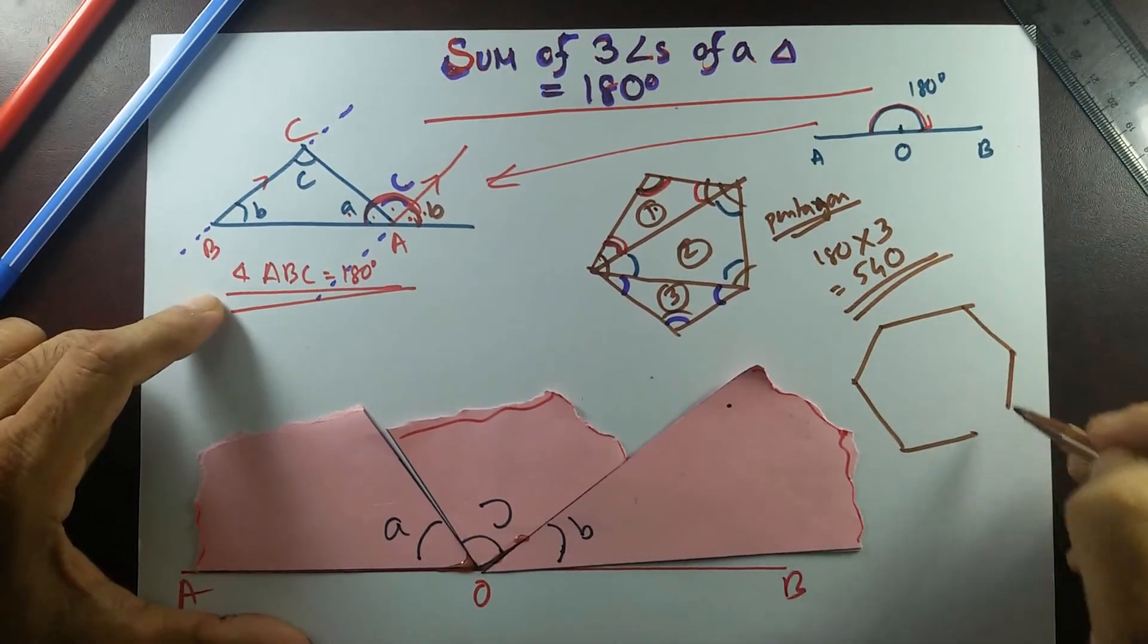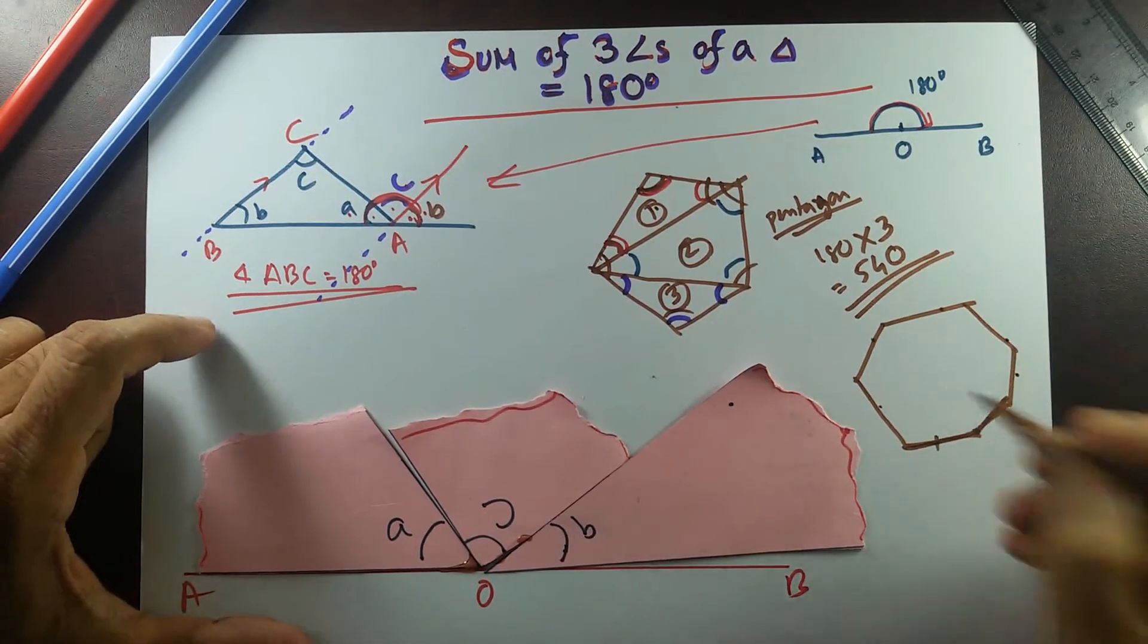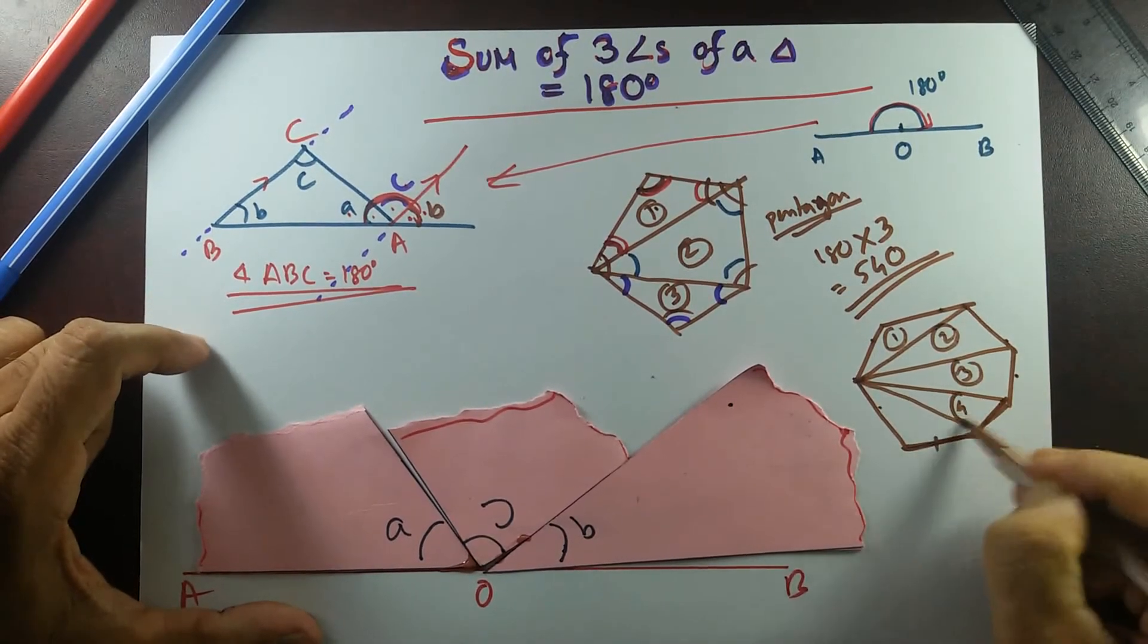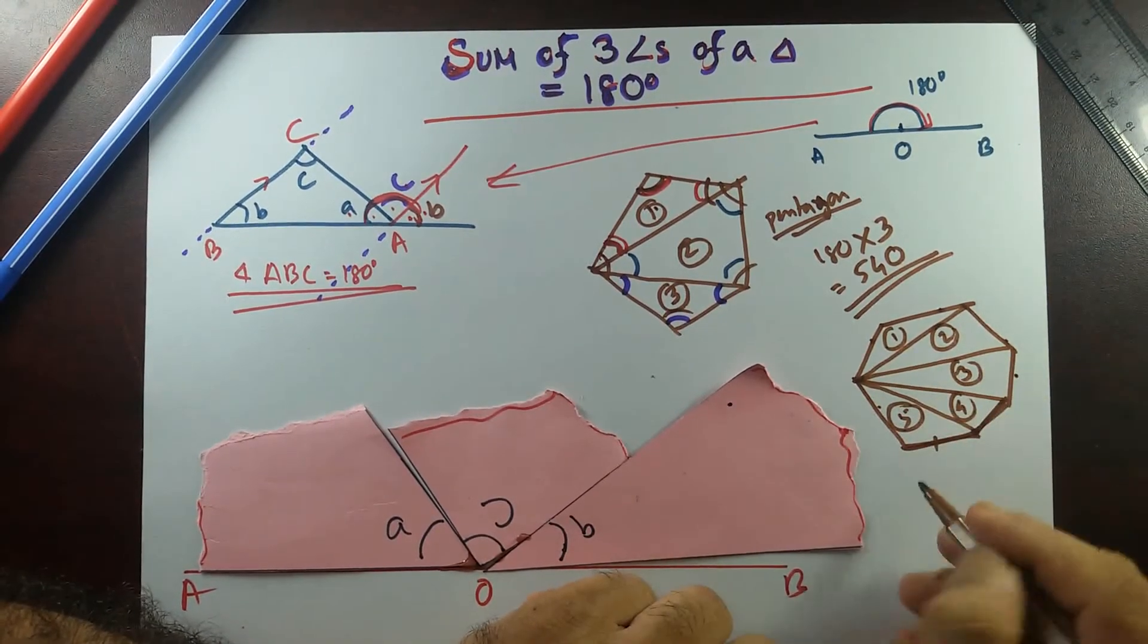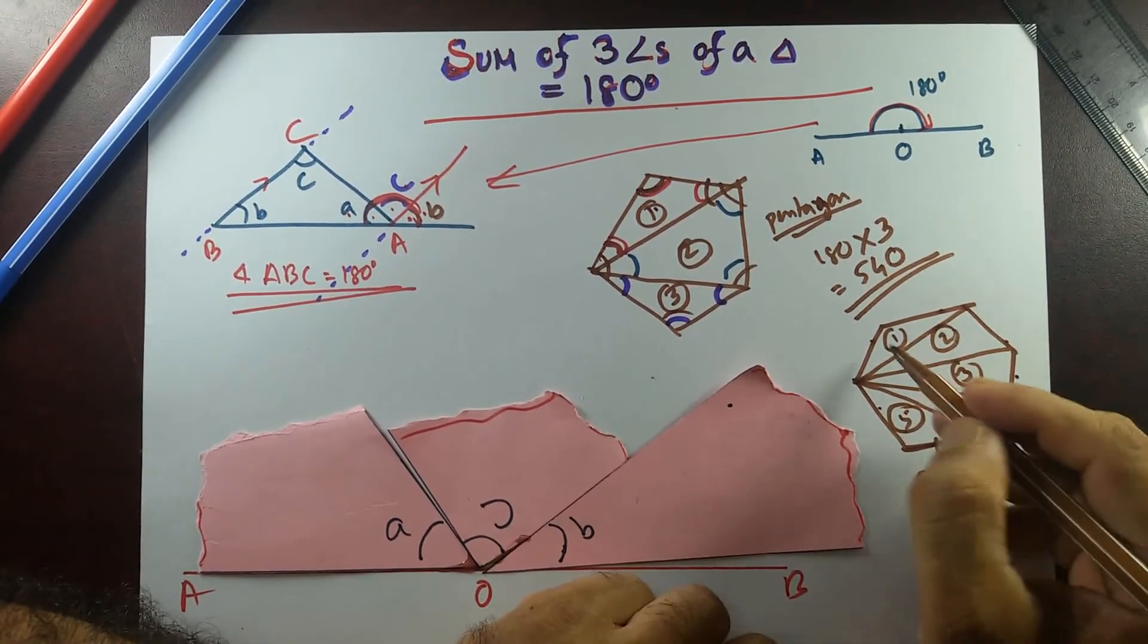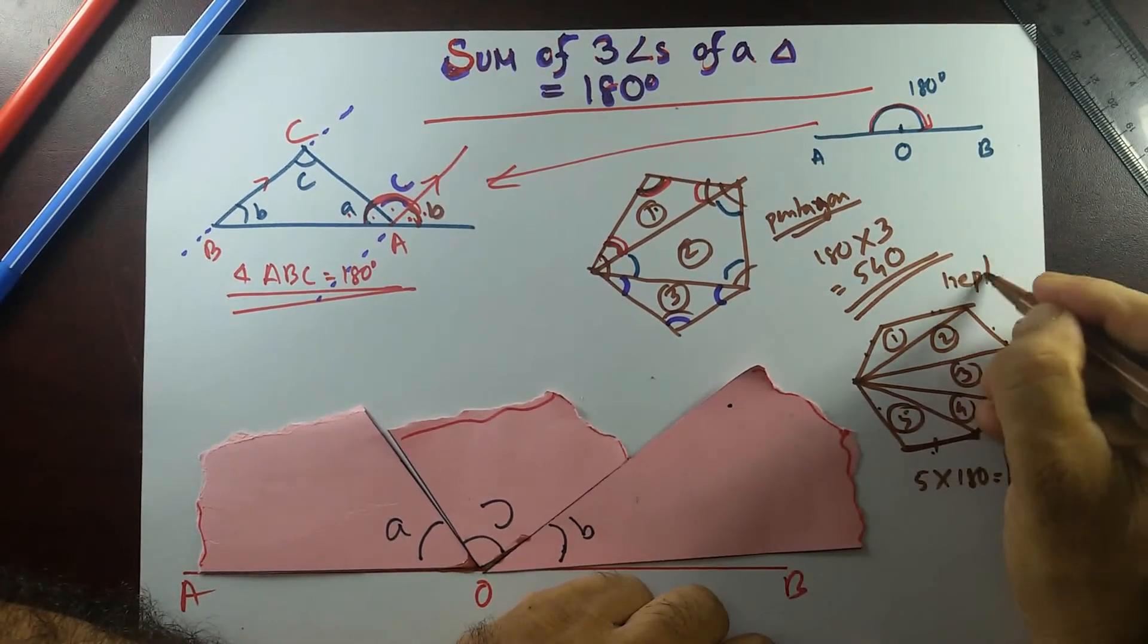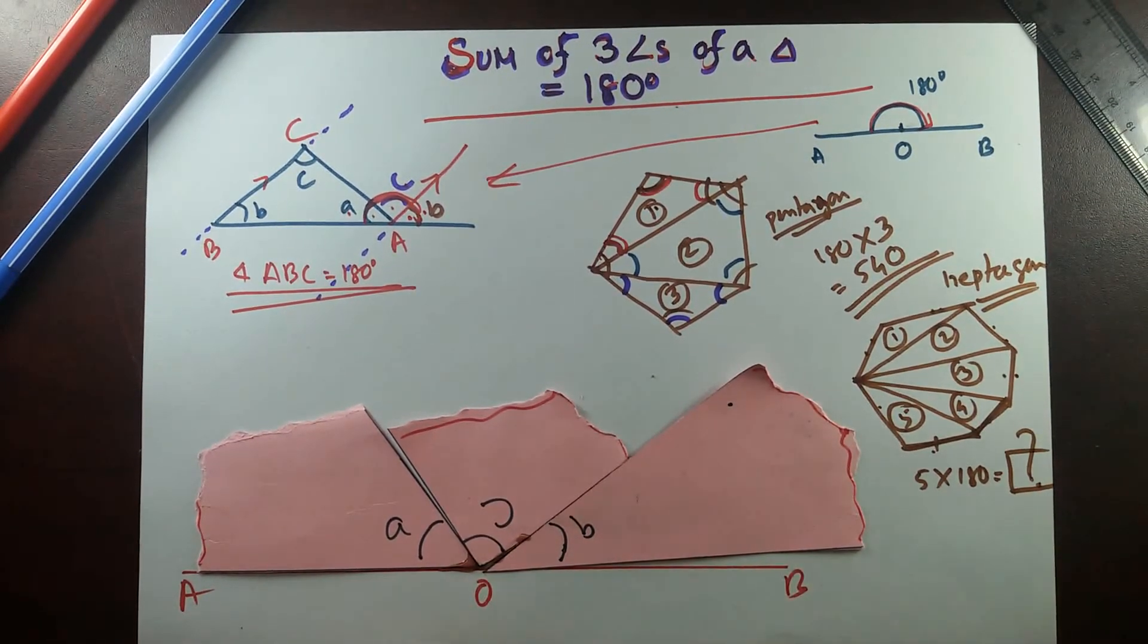Now can we do this? So I have 1, 2, 3, 4, 5, 6, 7 sides. Now I'm making triangles: 1, 2, 3, 4, 5. So there are 5 triangles. So sum of all these angles would be 5 times 180 degrees. Whatever that comes, that's the summation of all angles of this. I believe it's 7 sides: 1, 2, 3, 4, 5, 6, 7. This is a heptagon. This polygon's sum of interior angles equal to whatever that comes. I'll let you do that.